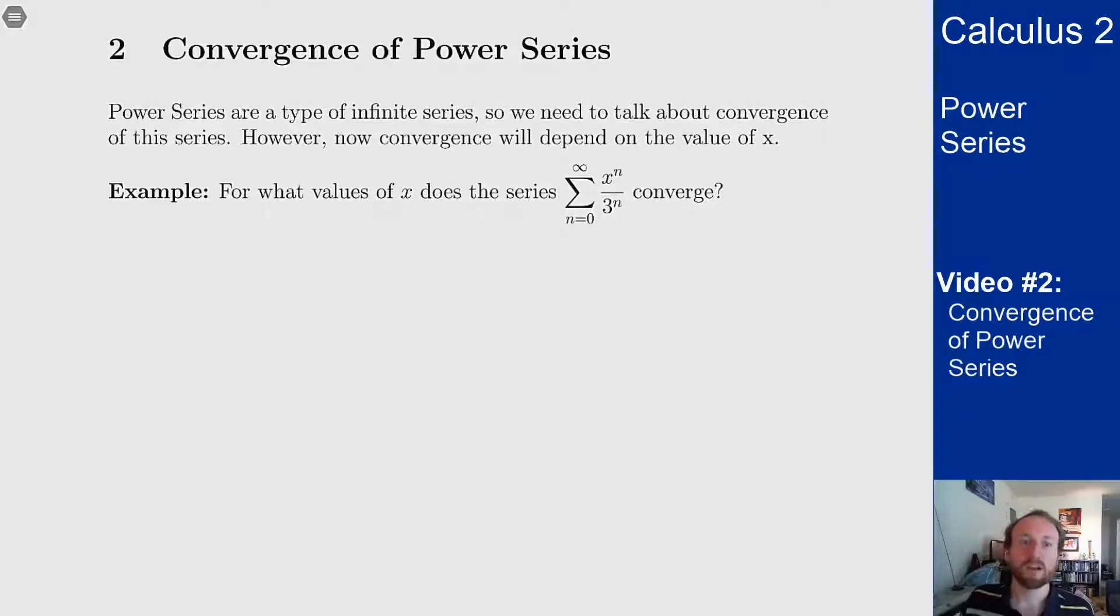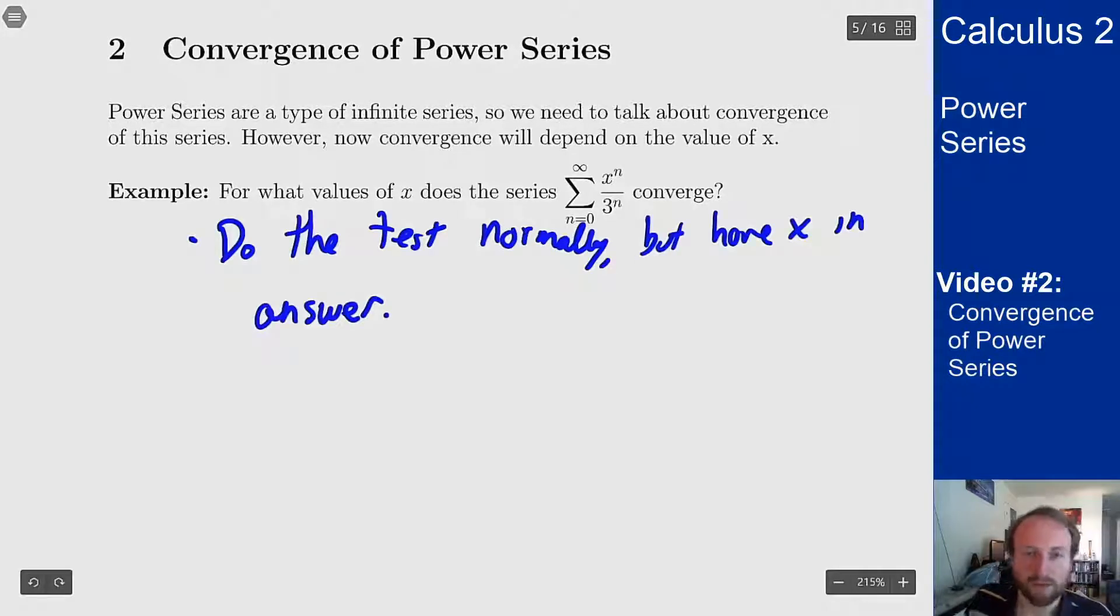So to start let's look at this example here. For what values of x does the series sum from 0 to infinity of x to the n over 3 to the n converge? You want to process this just like you normally would to see if it converges and there'll be an x in your answer. I see x to the n over 3 to the n, this is telling me to use the ratio test and for power series you're going to pretty much always want to use the ratio test.